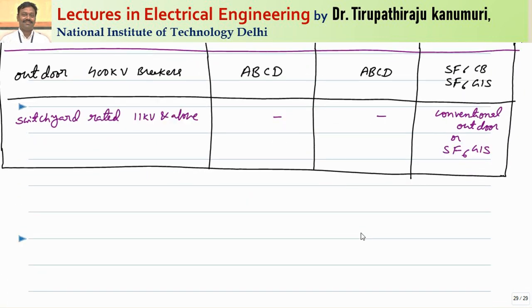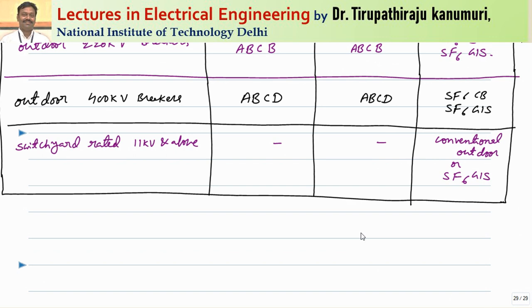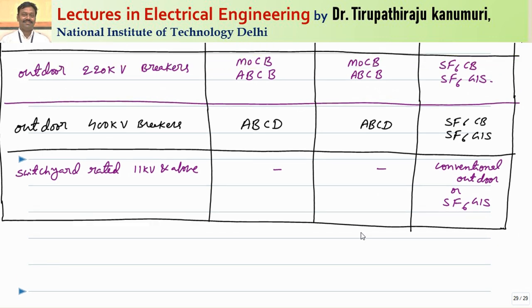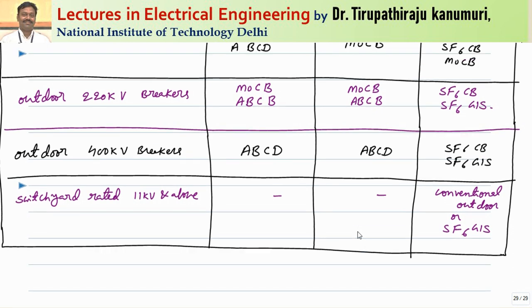In the next class, I am going to discuss the different types of circuit breakers in detail, mainly focusing on air brake circuit breakers, minimum oil circuit breakers, SF6, and vacuum circuit breakers — covering the respective advantages and disadvantages of each. I hope the different types of circuit breakers, current trends, and applications are completely clear to you. If you still have any queries, you can leave your comments in the comment section below and I will answer them. Thank you very much.